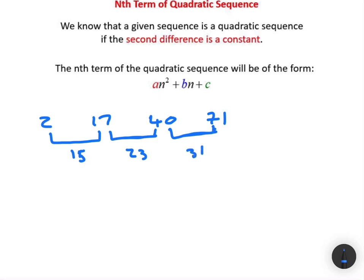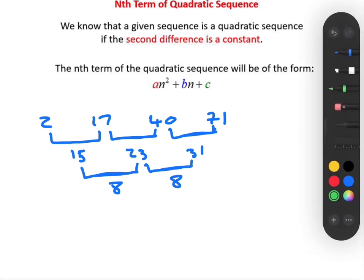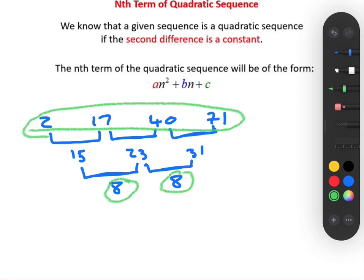Now we move to the second difference. If the second difference is a constant, then we know beyond reasonable doubt that the sequence is quadratic. The difference between 15 and 23 is 8, and the difference between 23 and 31 is again 8. So the second difference is a constant, and we can conclude that this sequence is quadratic.